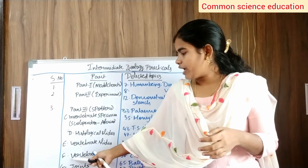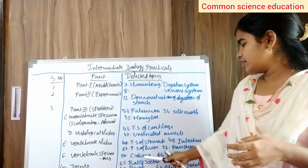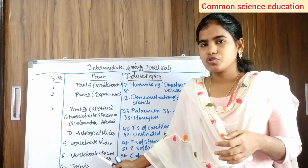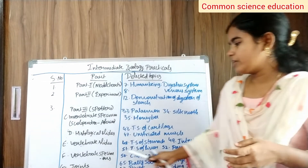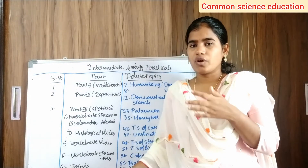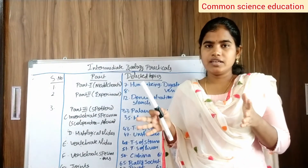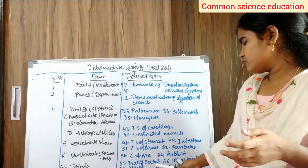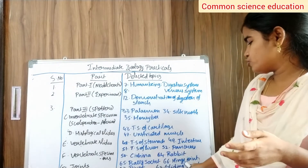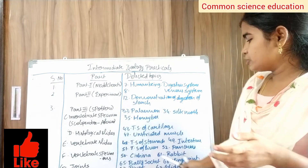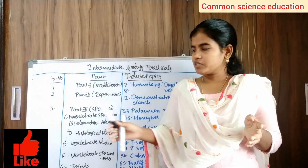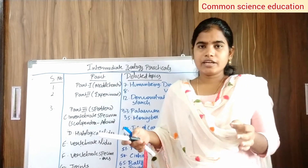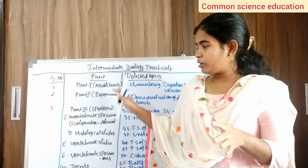Category F — vertebrate specimens: numbers 58 and 64, rabbit. Draw only these two diagrams for vertebrate specimens. For joints (category G), skeletal system joints are deleted. The joints were: 65 — ball and socket, 66 — hinge joint, 67 — pivot joint, 68 — gliding joint. Since joints are deleted, we do not need to draw them in the practical record.